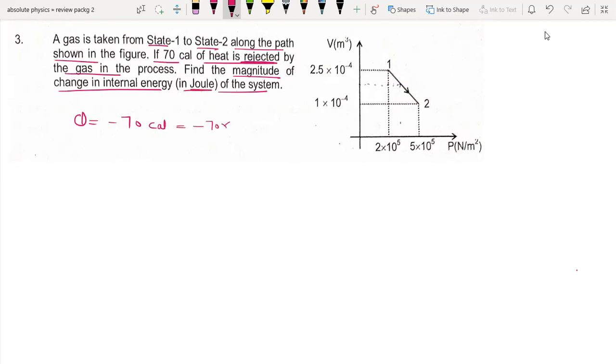Minus 70 into 4.2 equals minus 294 joules.